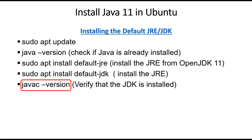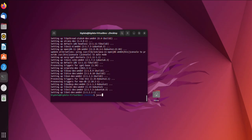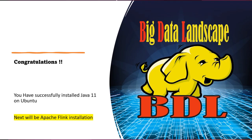Finally, let's verify that the JDK is installed correctly. Type javac --version and press Enter. You should see the version information for the Java compiler (javac), confirming that the JDK is installed and functioning properly. Congratulations! You have successfully installed Java 11 on your Ubuntu system.